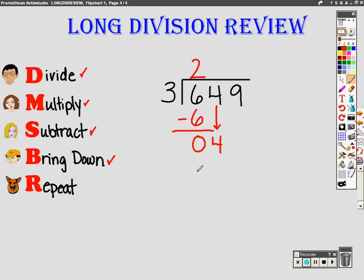Now we repeat. Now divide. Three goes into four. How many times without going over? That's right, one. Now we multiply. Three times one equals three.